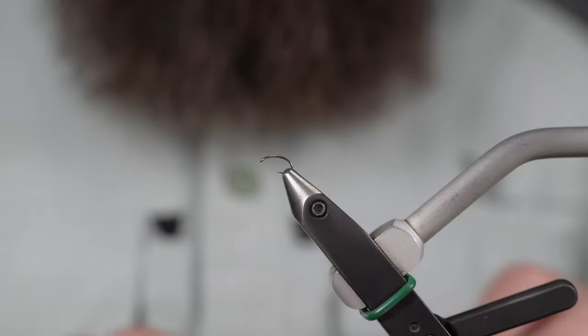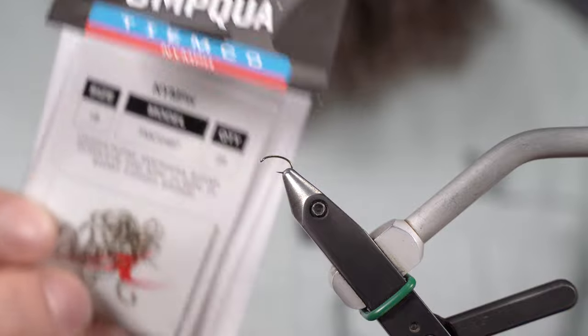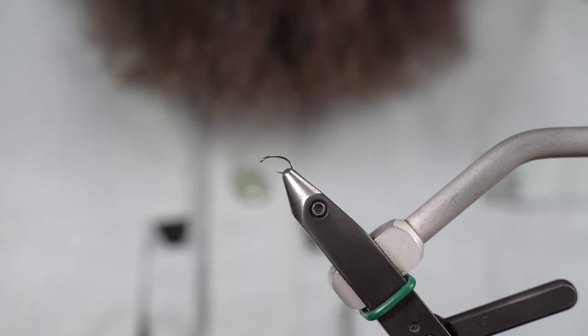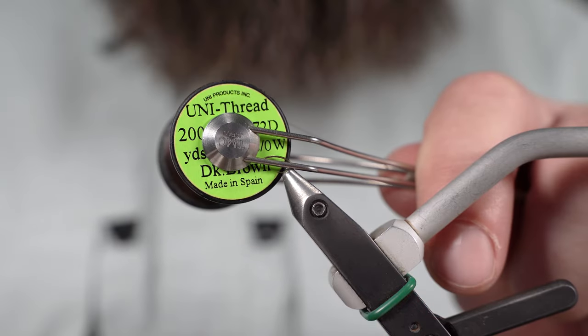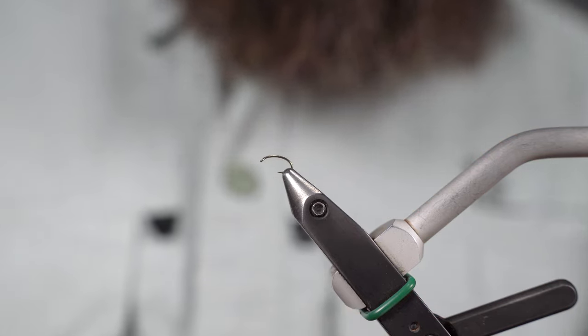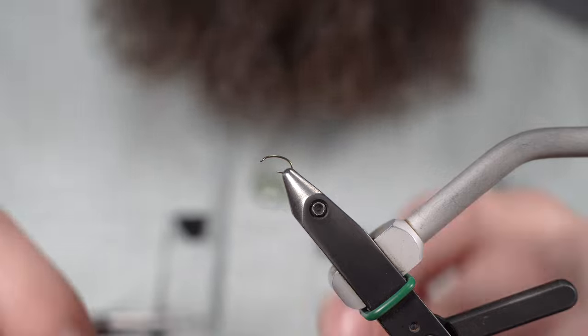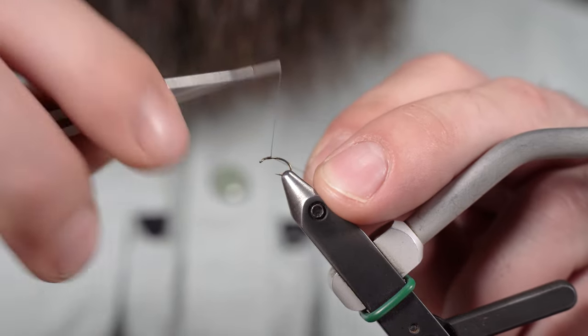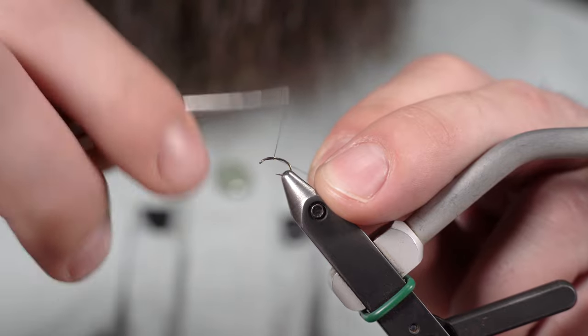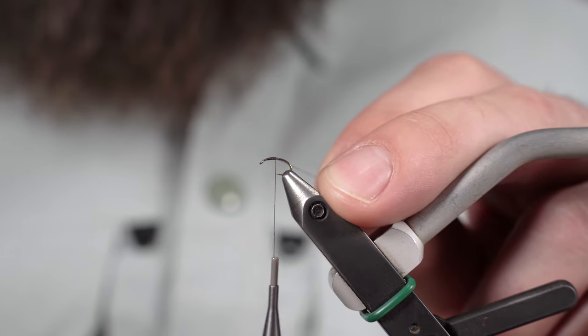So I'm starting here with a Tiemco 2487 size 18 using the dark brown 8-aught uni thread here. Start about an eye length behind the eye. We're up to about half weight.